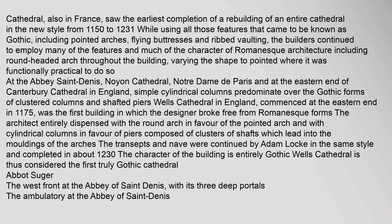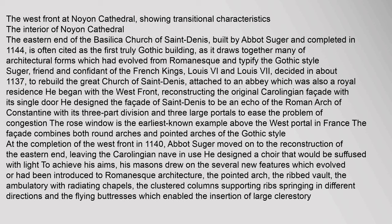Abbot Sugar: The eastern end of the Basilica Church of St Denis, built by Abbot Sugar and completed in 1144, is often cited as the first truly Gothic building, as it draws together many of the architectural forms which had evolved from Romanesque and typify the Gothic style. Sugar, friend and confidant of the French kings Louis VI and Louis VII, decided in about 1137 to rebuild the Great Church of St Denis. Attached to an Abbey which was also a royal residence, he began with the west front, reconstructing the original Carolingian façade with its single door.